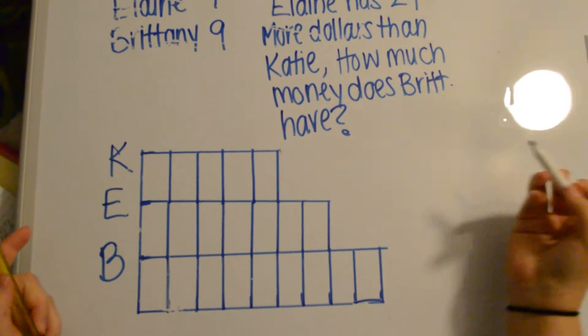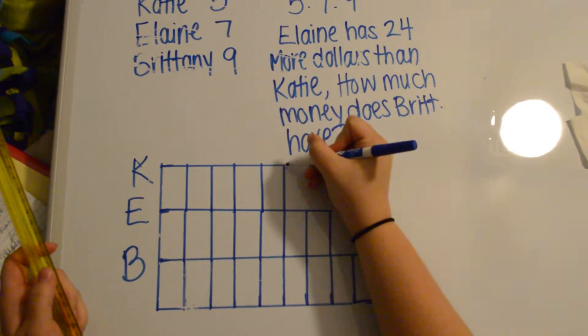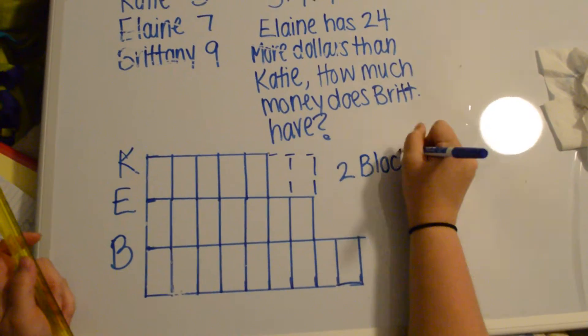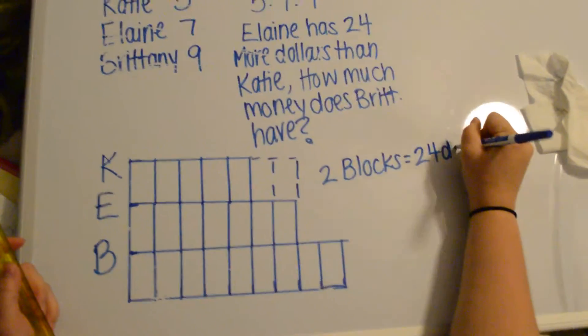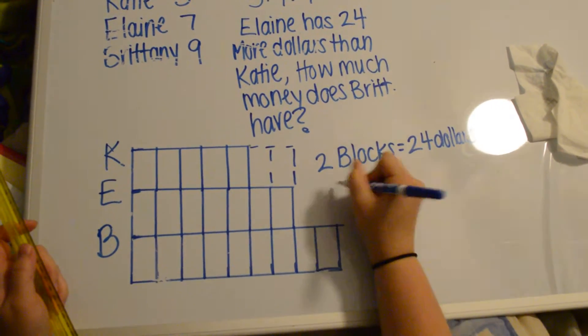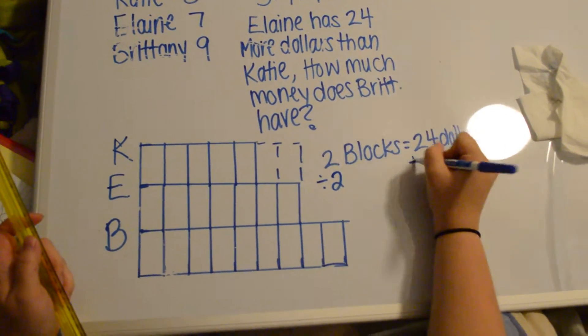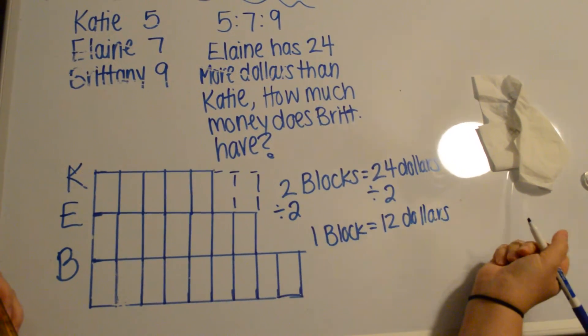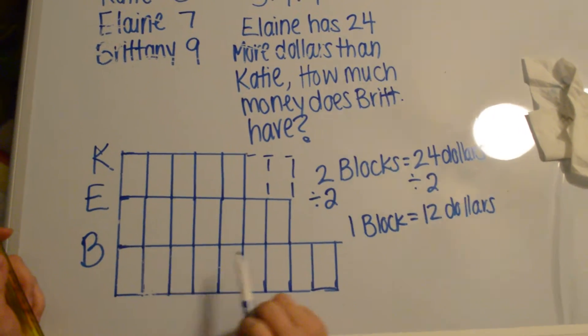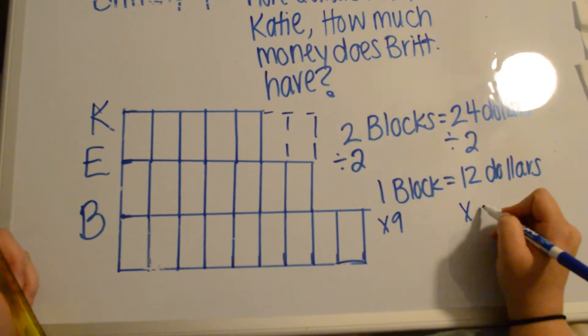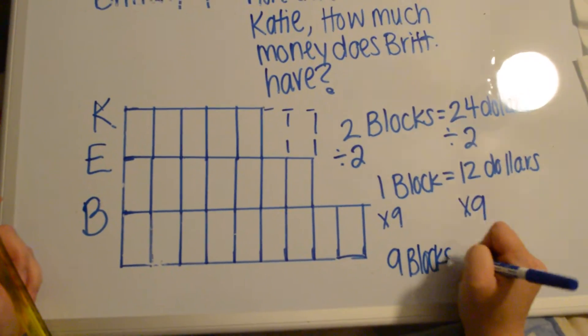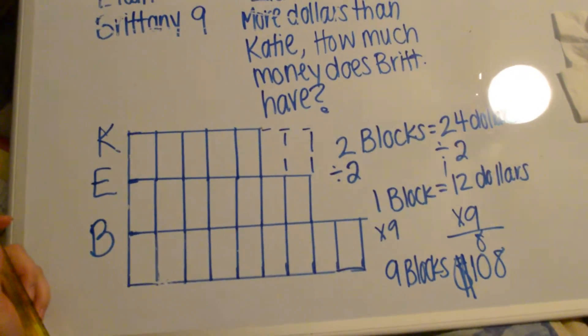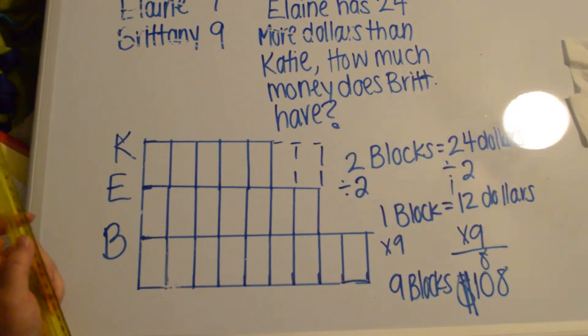Our question tells us that Elaine has 24 more dollars than Katie. We see here that Katie has 2 blocks less than Elaine, so 2 blocks equals $24. To find the amount of 1 block, we divide by 2, so 1 block equals $12. We want to know how much Brittany has. She has 9 blocks, so we multiply by 9. 9 blocks equals $108. That's how much Brittany has. That's your example of tape diagrams. Now we're going to go to a different one using a line graph.